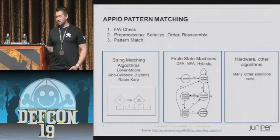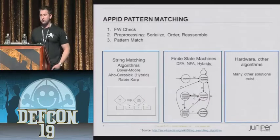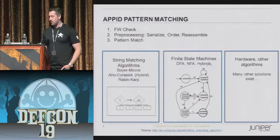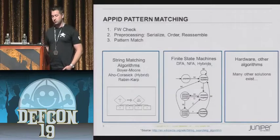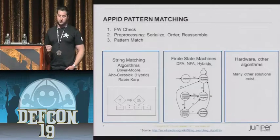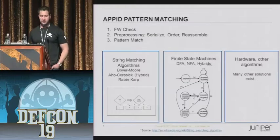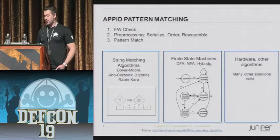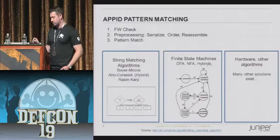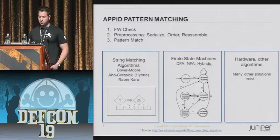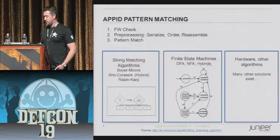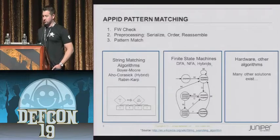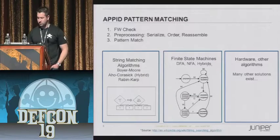In terms of how App ID does pattern matching, there are different algorithms - we won't go into much detail. A lot of it is the same types of pattern matching techniques used in traditional IPS products and layer 7 service products like URL filtering and AV. Basically what typically has to happen is first the firewall will permit or deny the traffic, there's some pre-processing we'll go into in more detail, and then we actually do the pattern matching. There are different string matching algorithms like Boyer-Moore, Aho-Corasick, and Rabin-Karp, plus DFA-based state machine matching, and of course hardware is being leveraged more and more to do the pattern matching.